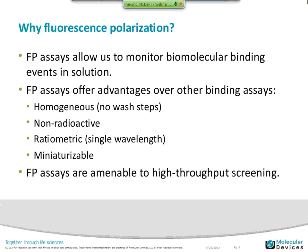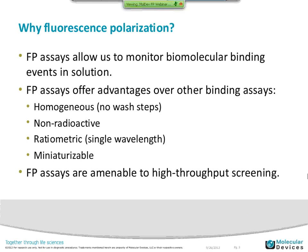FP assays allow us to monitor biomolecular binding events that are occurring in solution. These types of assays offer advantages over other types of binding assays in that they are homogeneous — there's no wash step, no washing of unbound material. These are non-radioactive assays that often replace older technologies that involve radioisotopes. These are ratiometric assays, and you'll see why that is later. They're very amenable to miniaturization, making them very good for high-throughput screening and can be miniaturized down to the 1536 plate format or even smaller.